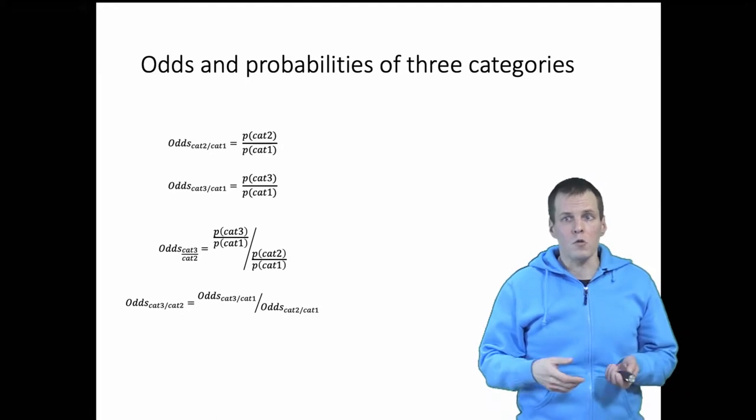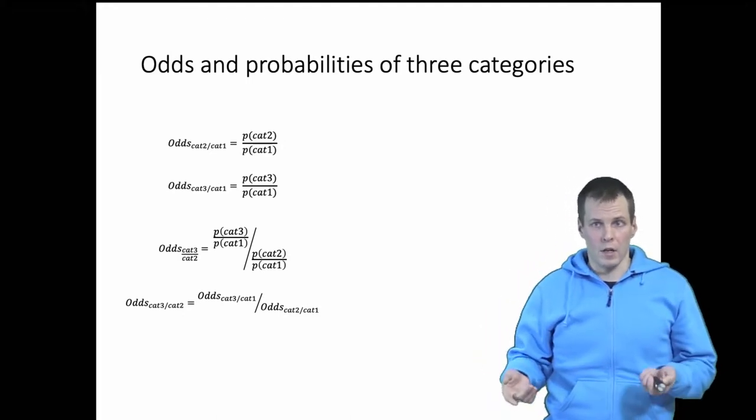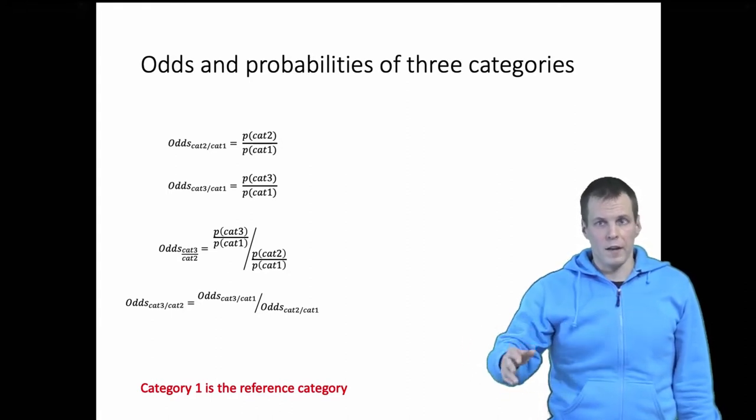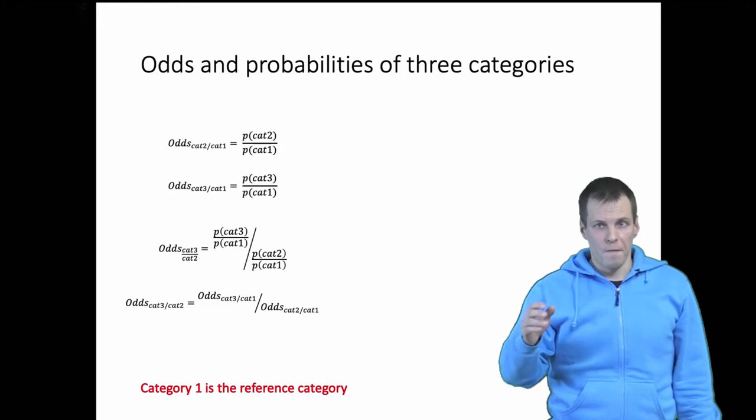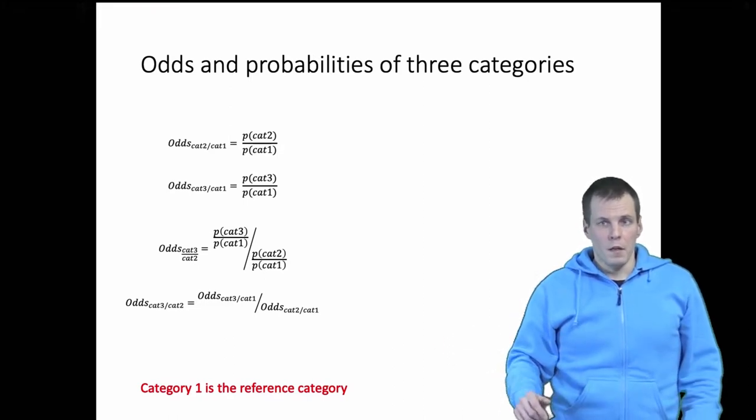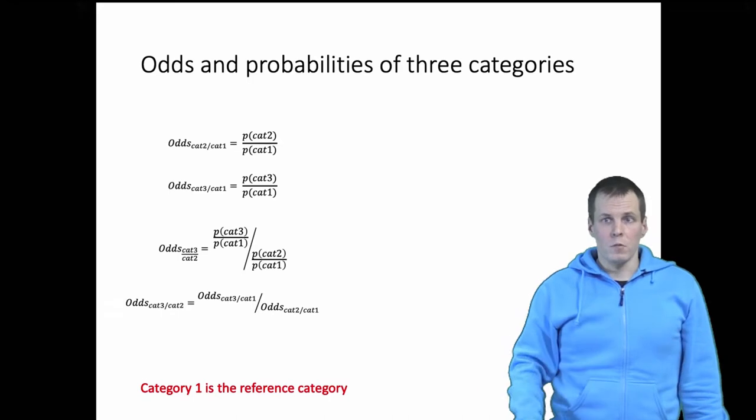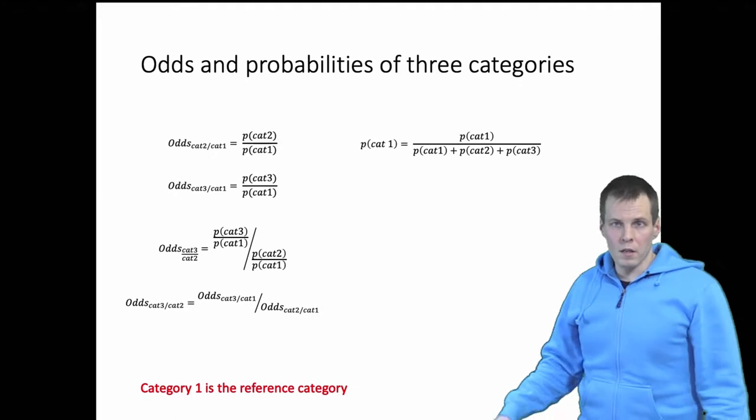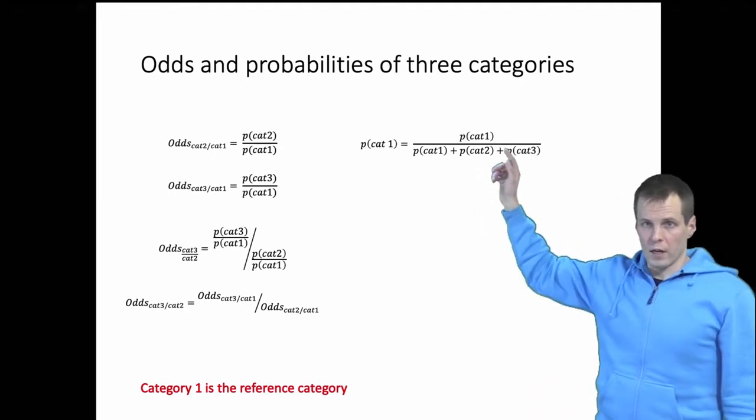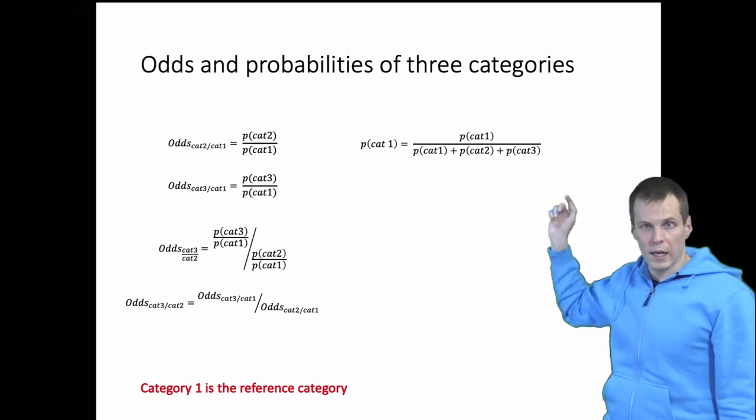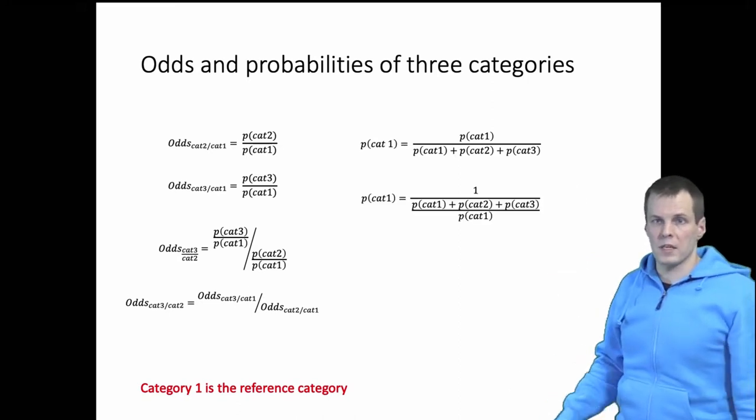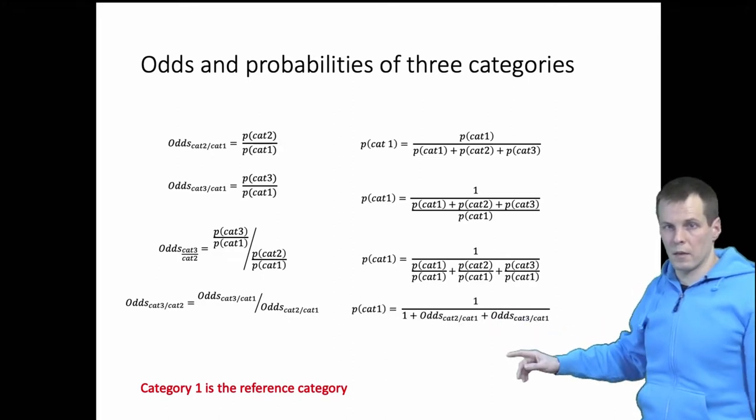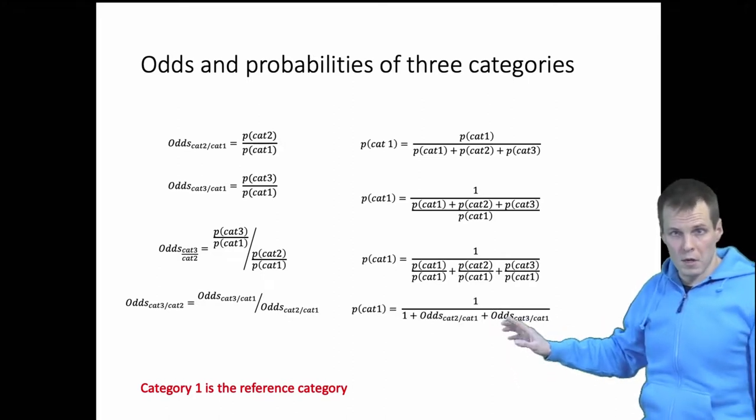That allows us to have one category as a reference category. We estimate a model that explains the choice between Finland and Sweden and the choice between Finland and Norway, for example. Then when we know the odds, we can calculate the probabilities. The probability of category one is expressed as odds, and that gives us the probability of category one as a function of the odds.